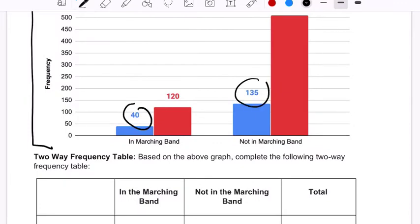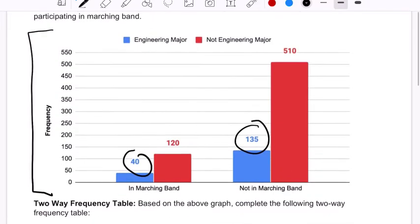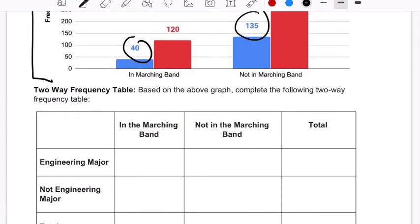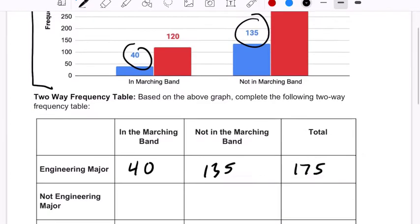So we've got 40 and 135. Those are our engineers, 40 in marching band, 135 not. So let's put that down. 40 in, 135 not, and it's 175 engineering majors in total.